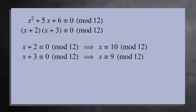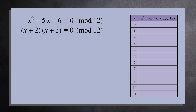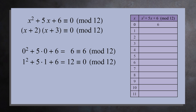Are these all the solutions? Since there are only 12 numbers in the ring of integers mod 12, let's go ahead and check all possibilities. We'll plug in 0 through 11 into the polynomial x squared plus 5x plus 6. If you plug in 0, you get 6, so x equals 0 is not a solution. If you plug in 1, you get 12, which is congruent to 0 mod 12, so 1 is a solution.